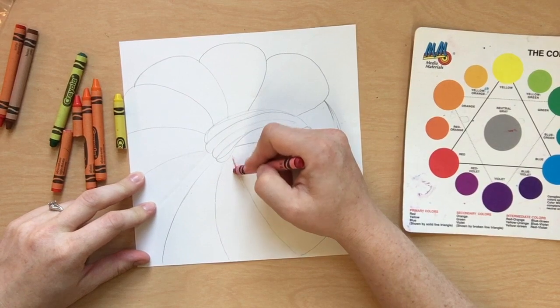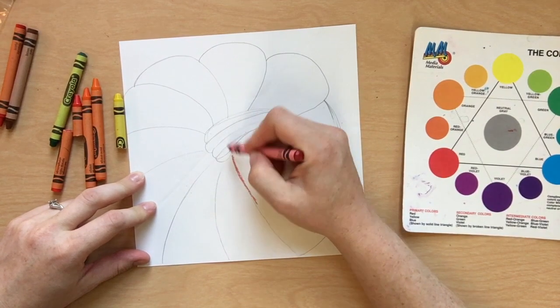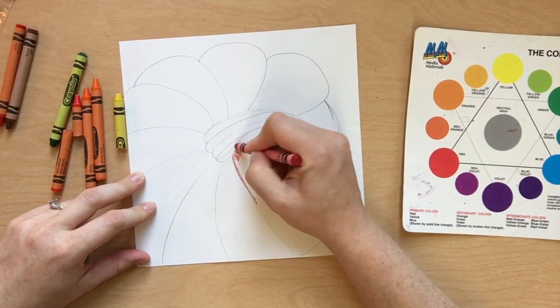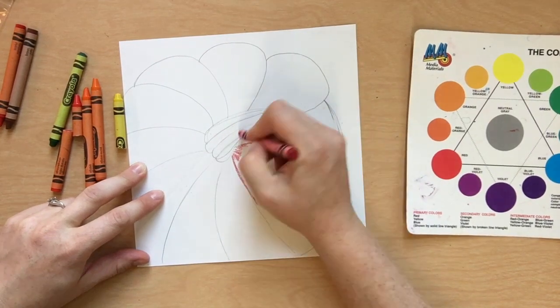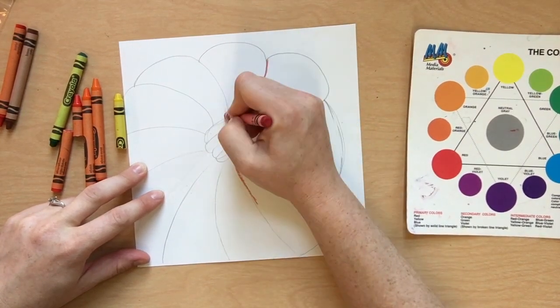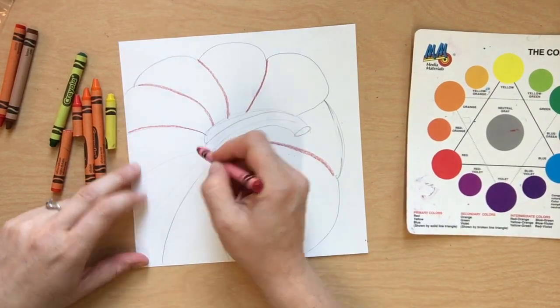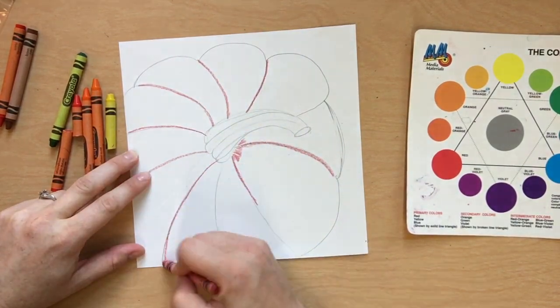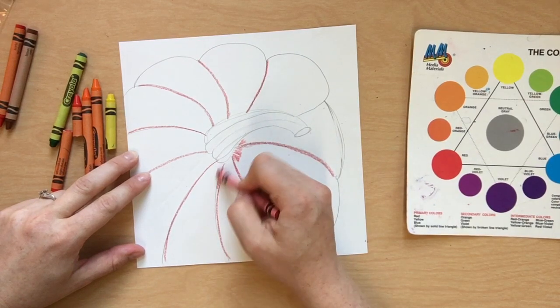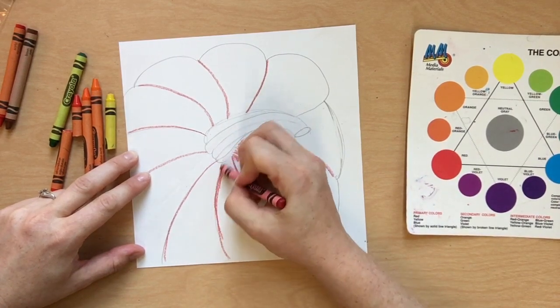Starting with the red crayon, which happens to be our darkest value. Value is how light or dark a color is. So since we're doing an orange pumpkin, we'll start with red, which would be a darker value than the orange. First, trace all the rounded curves.